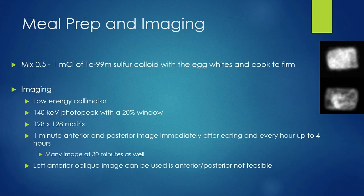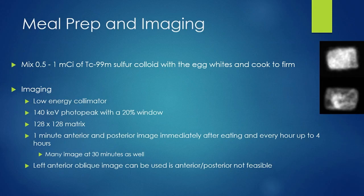For imaging, we use a low-energy collimator. This is Tc-99M, 140 keV photopeak with a 20% energy window, standard matrix — and similar imaging parameters apply to all Tc-99M studies in this talk. We take one-minute anterior and posterior images immediately after eating, then every hour up to four hours, with an additional image at 30 minutes. The multisociety procedure standard includes 30-minute normal retention values as well.